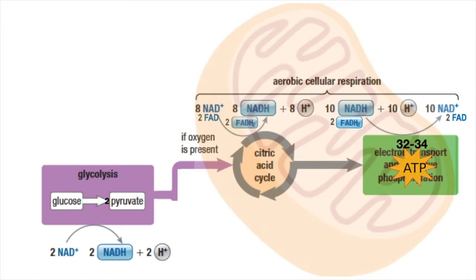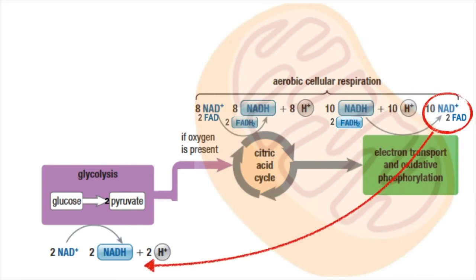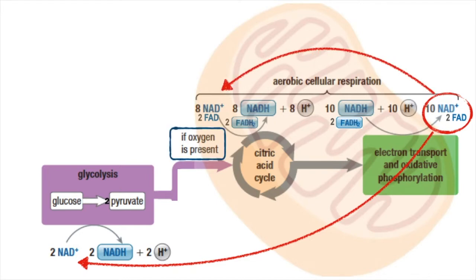Between 32 to 34 ATP will be made at the electron transport chain. And once that ATP is made and used by the cell, the electron carriers, once oxidized, can then return to glycolysis, pyruvate oxidation, and the Krebs cycle to be reduced once more and keep aerobic cellular respiration going. All of this happens when oxygen is present in the cell, and you can review that process in more detail by watching the two videos I posted explaining aerobic cellular respiration.